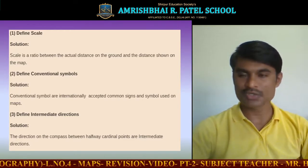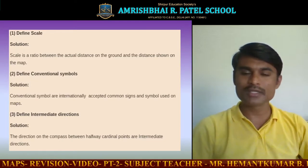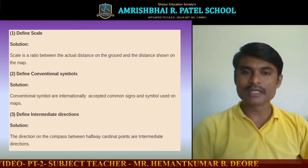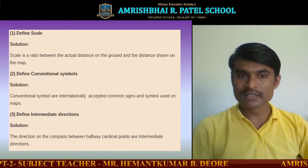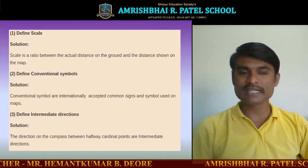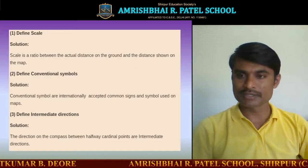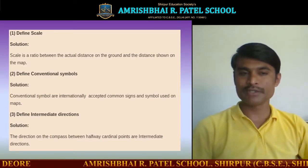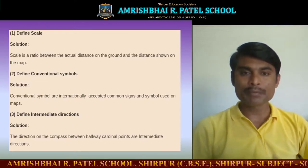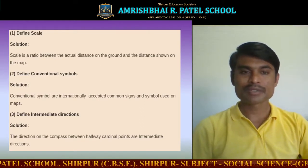Now moving to very short answer questions — one line answers. First: define scale. Scale is a ratio between the actual distance on the ground and the distance shown on the map. Second: define conventional symbols. Conventional symbols are internationally accepted common signs and symbols used on maps. Third: define intermediate directions. The directions on the compass between halfway cardinal points are called intermediate directions.